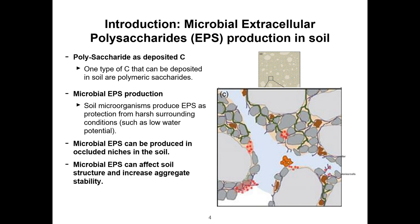In addition to protecting the microorganisms, EPS also has an effect on the soil. First, because microorganisms can get into occluded and protected niches in the soil, it can increase their longevity there. Also, as an adhesive agent, it can increase aggregate stability. If you zoom in on the soil, we can see the microbial cells in pink, and the pink smudge resembling the EPS, giving a sense of how it binds soil particles together and occupies more occluded niches in the soil.